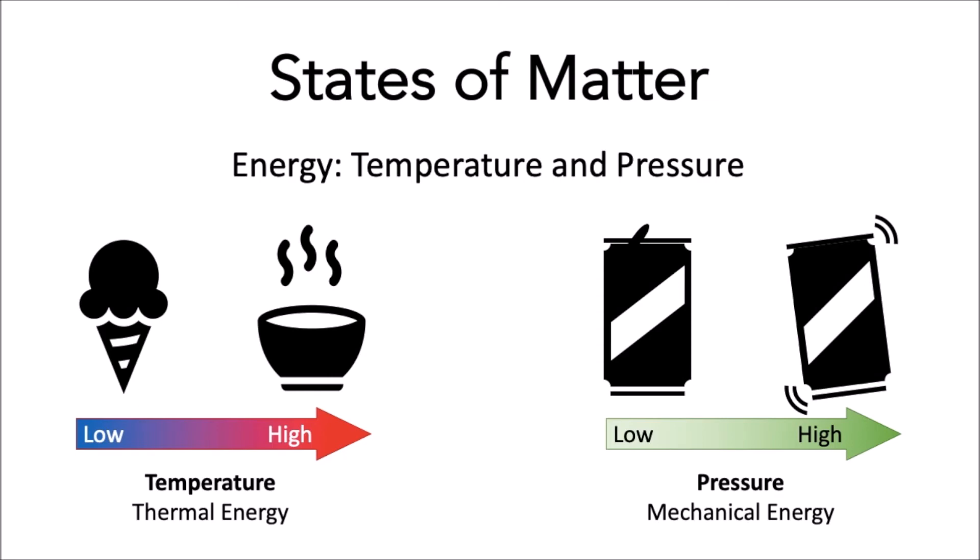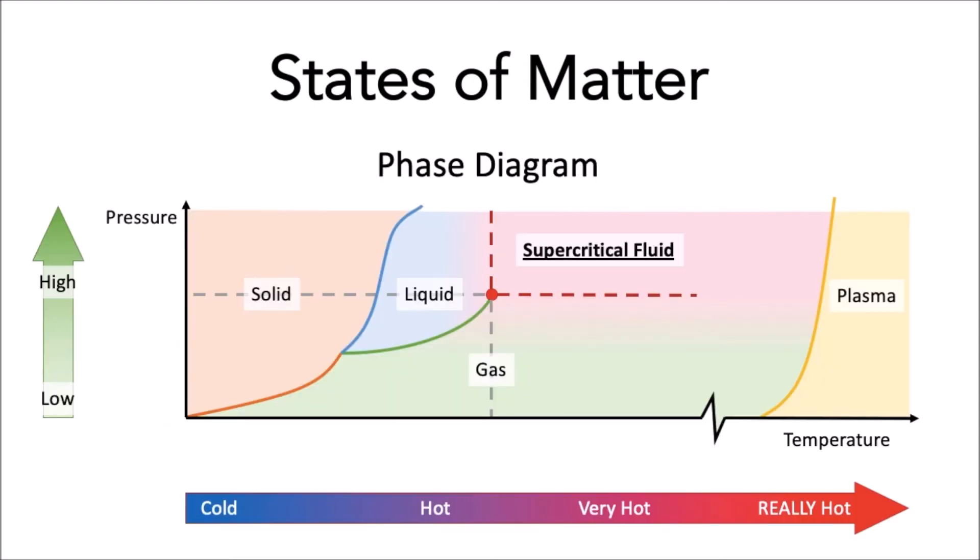So after many experiments where scientists took notes of when changes of state and matter happened at a lot of different temperatures and pressures, phase diagrams were created. Now this lets us pinpoint what phase or state something will be in depending on its temperature and pressure.